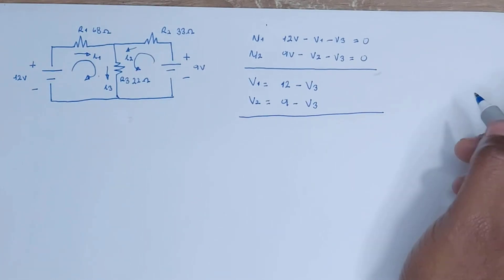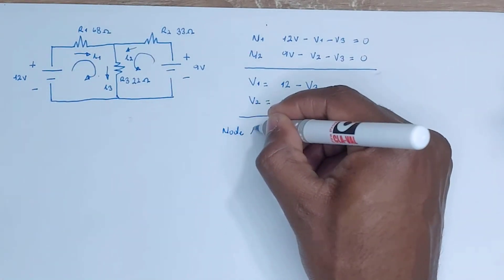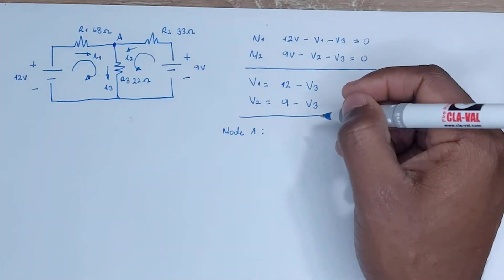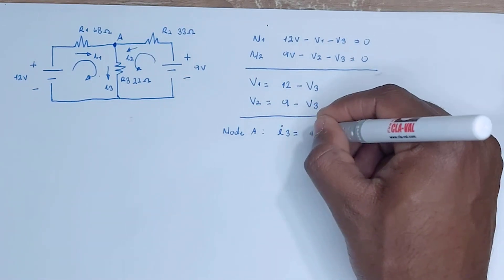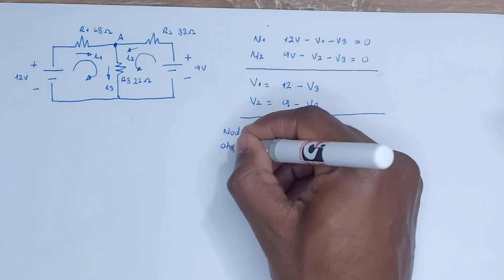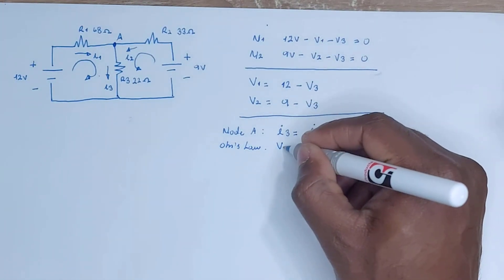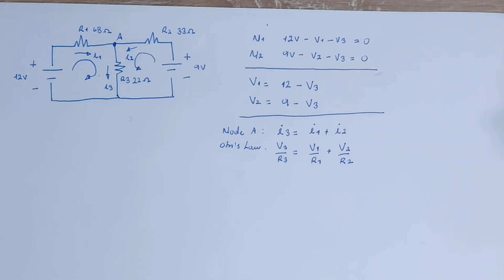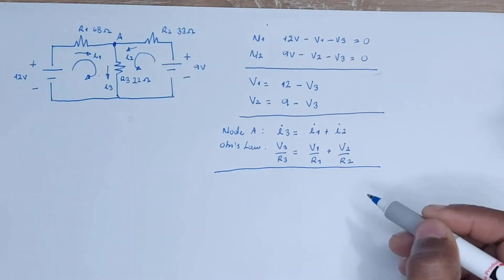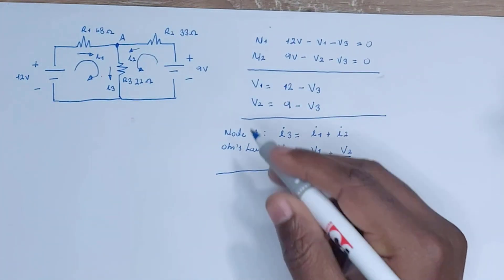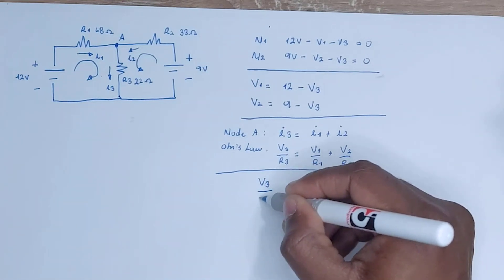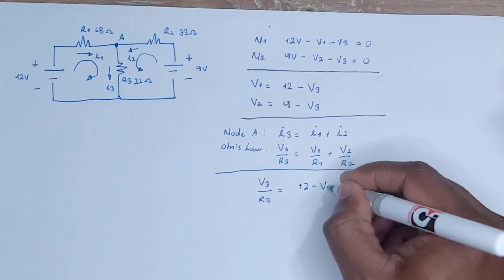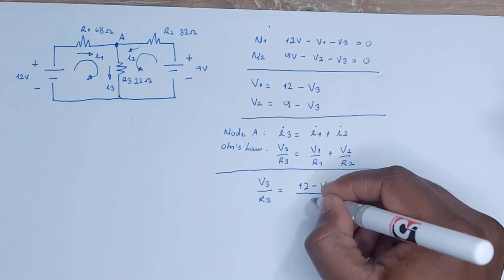Our work is to find an equation for voltage 3 that has nothing to do with voltage 1 or voltage 2. Writing down Kirchhoff's current law equation for node A: I3 equals I1 plus I2. Applying Ohm's law: voltage 3 over R3 equals voltage 1 over R1 plus voltage 2 over R2. We can replace voltage 1 with (12 volts minus voltage 3) and voltage 2 with (9 volts minus voltage 3), expressing the whole equation in terms of voltage 3.